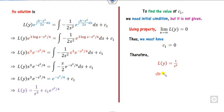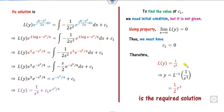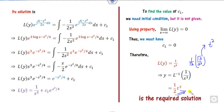From the simplified L{y}, we take the inverse Laplace. Dividing by gamma(3) and multiplying by gamma(3), the inverse Laplace gives y = T² as the required answer for Example 2.